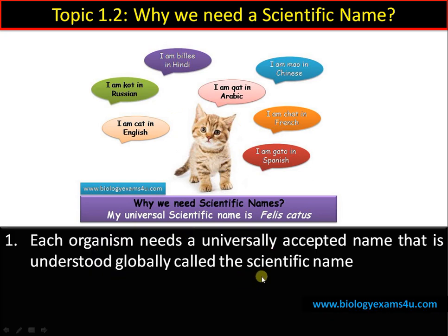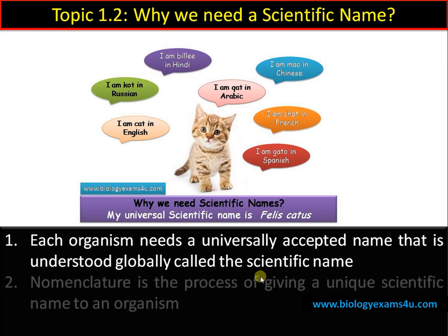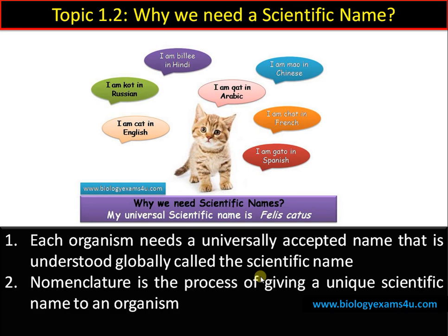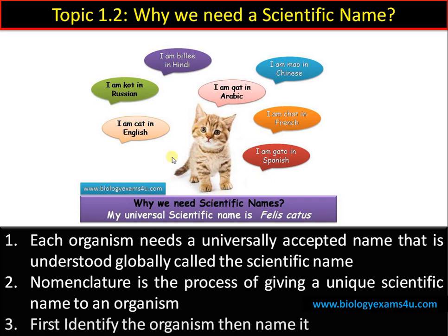Each organism needs a universally accepted global name — that is understood globally — called the scientific name. Nomenclature, or naming, is the process of giving a unique scientific name to an organism. First we identify the organism, then name it — identification is followed by nomenclature — and that is followed by classification.